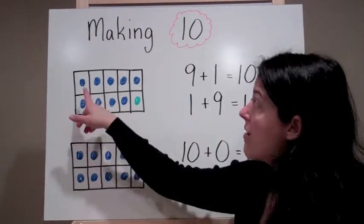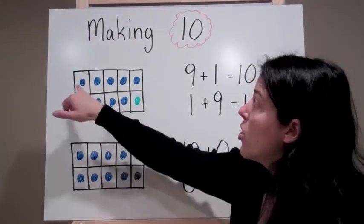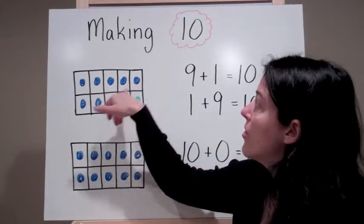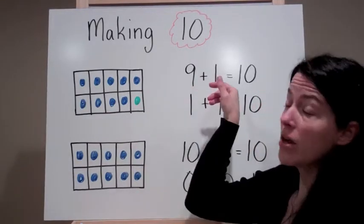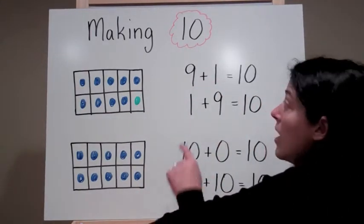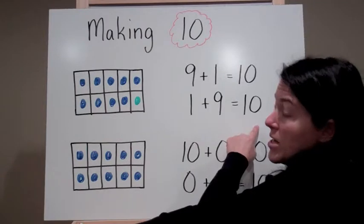Lastly, I have a tens frame where I have a row of 5 filled and then I have 6, 7, 8, 9. So I know that 9 plus 1 equals 10 and 1 plus 9 equals 10.